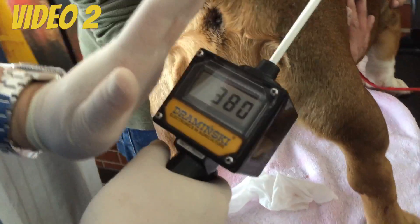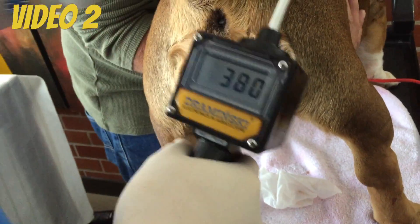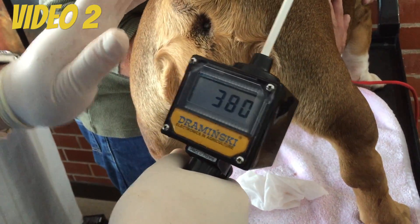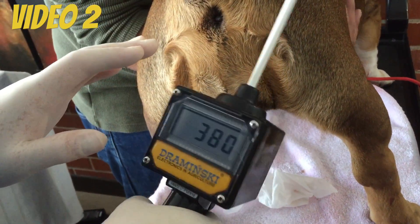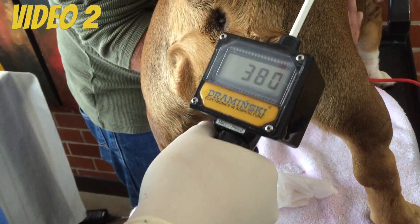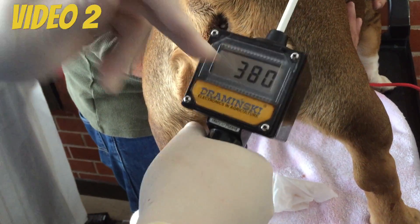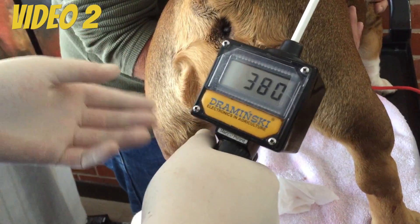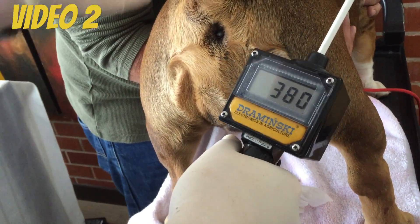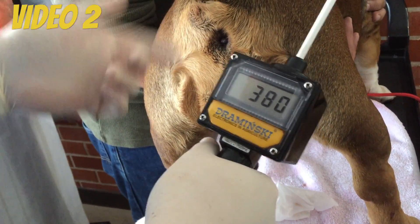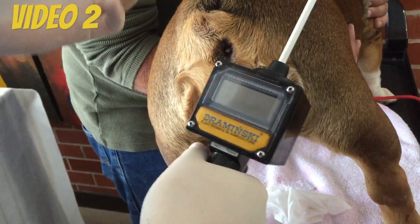So according to the Draminsky, I'm supposed to start breeding her today. That means that there was an LH peak and it dropped. So according to this, the progesterone levels had to have rise. So we're going to go to the smear now.